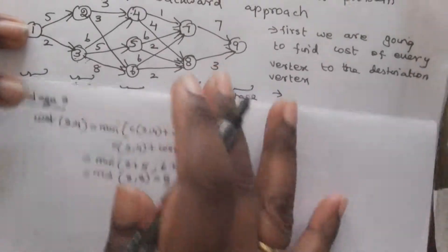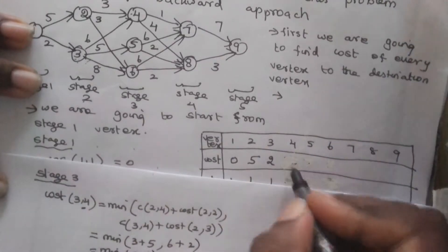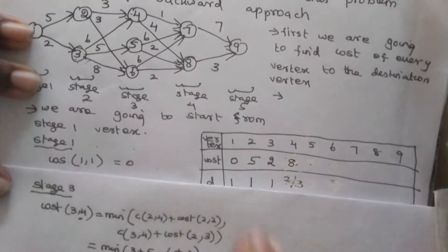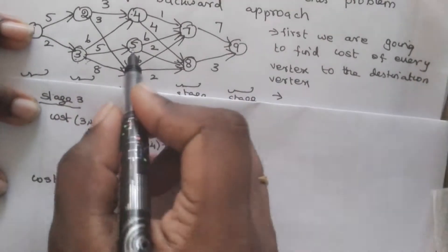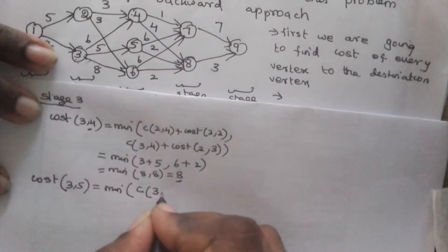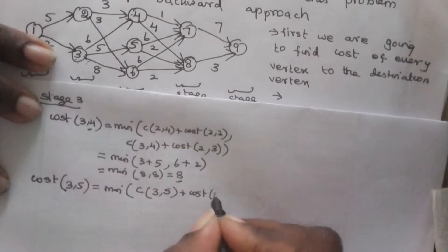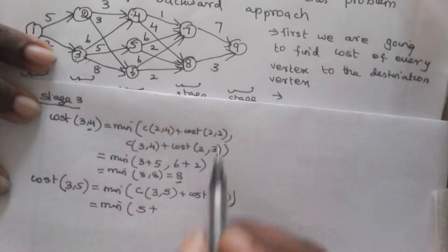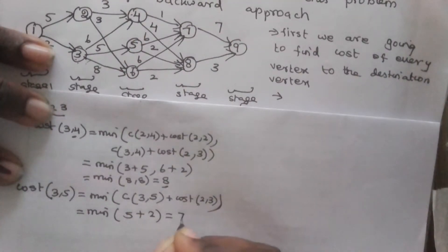Now we find cost(3,5). Only one edge comes to vertex 5, from vertex 3. So cost(3,5) = minimum of C(3,5) + cost(2,3) = 5 + 2 = 7. The cost value and D value are stored in the table.